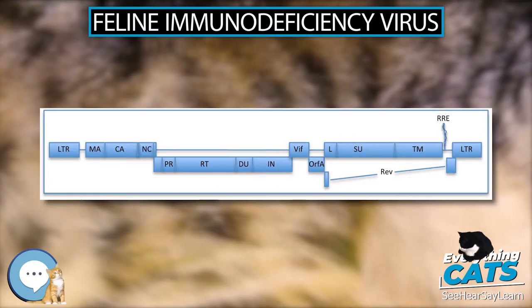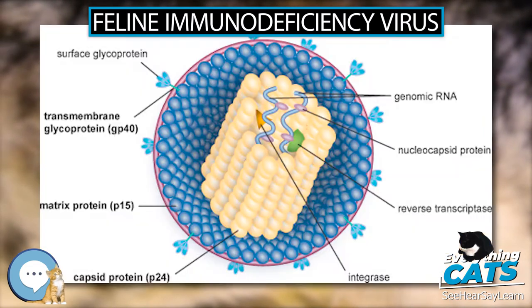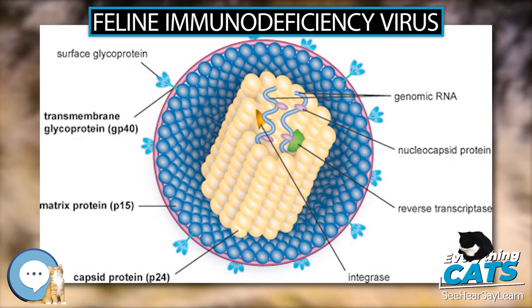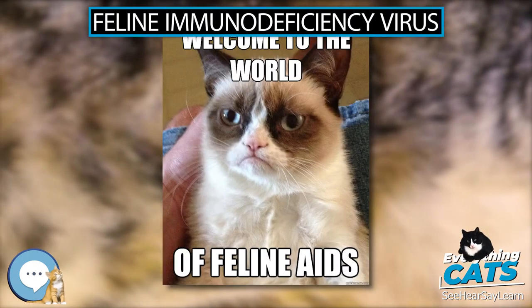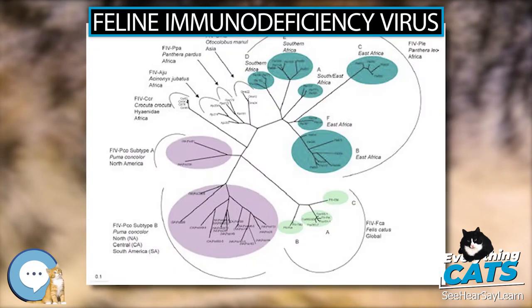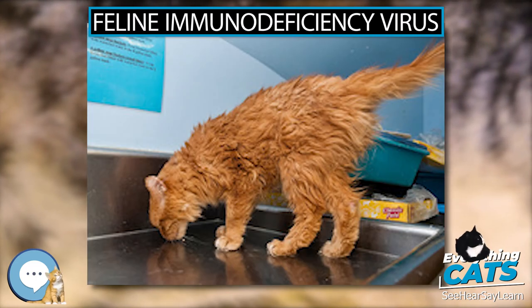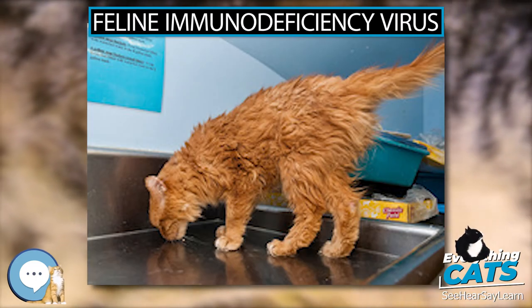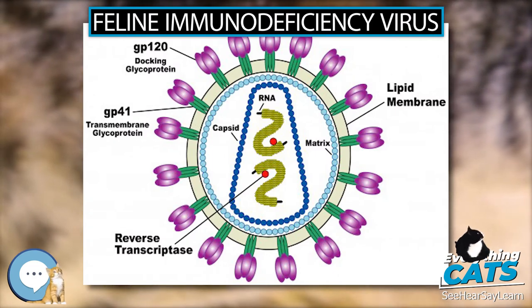FIV compromises the immune system of cats by infecting many cell types, including CD4+ and CD8+ T-lymphocytes, B-lymphocytes, and macrophages. FIV can be tolerated well by cats, but can eventually lead to debilitation of the immune system by the infection and exhaustion of T-helper cells. The rate of occurrence in cats is less than 5%; in humans with HIV, this percentage is estimated to be over 50%.